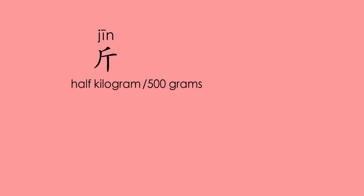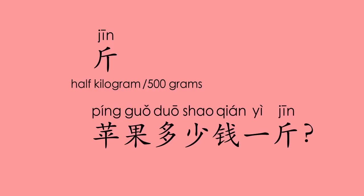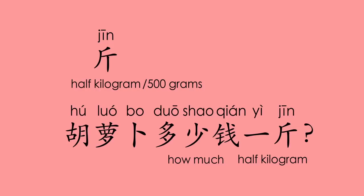公斤 (kilogram). 斤 — half kilogram, five hundred grams. 斤 is used more in daily life, showing the price of fruits, vegetables, meats, and other foods sold by weight. 苹果多少钱一斤? (How much is half a kilogram of apples?) 胡萝卜多少钱一斤? (How much is half a kilogram of carrots?)